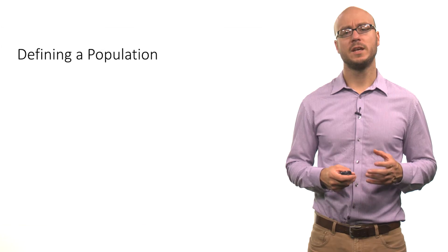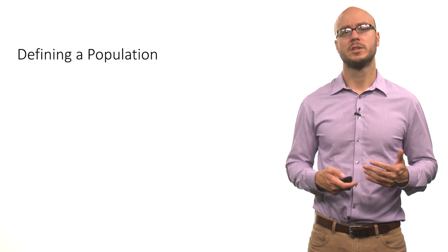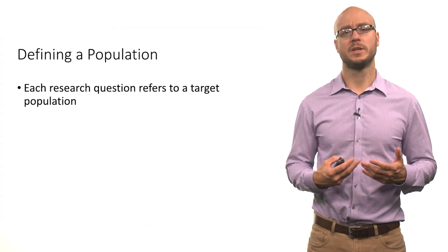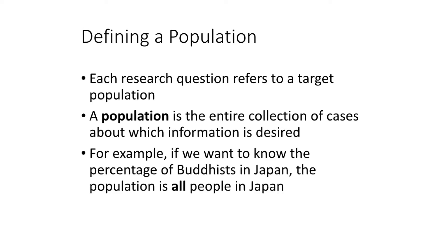These are the kinds of real research questions that people in the social sciences and humanities ask. For each of these questions, there's an implicit population. A population is simply the entire collection of cases or observational units about which we desire information. Each of these questions has a target population.